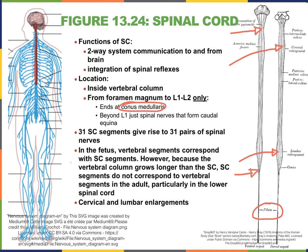The spinal cord gives rise to spinal nerves, which we'll look at in more detail when we get to the peripheral nervous system. For now, be aware that we have a total of 31 pairs of spinal nerves arising from either side of the bilaterally symmetrical spinal cord. The spinal cord is so much shorter than the vertebral column because the spinal cord stops growing much sooner — the vertebral column continues to grow for a longer time period both in the embryo and the child.